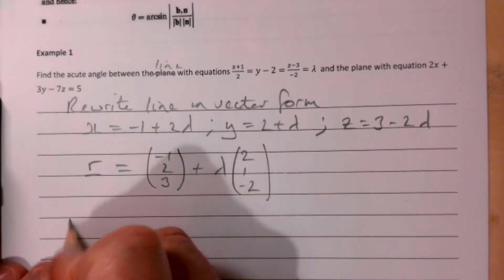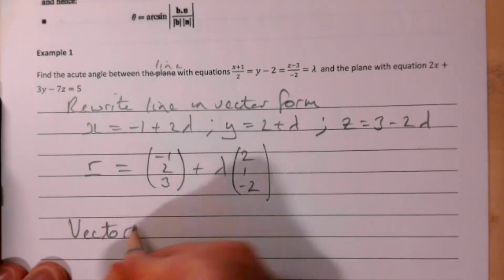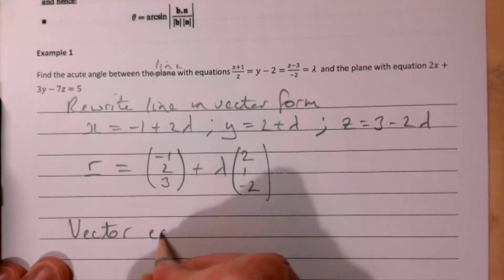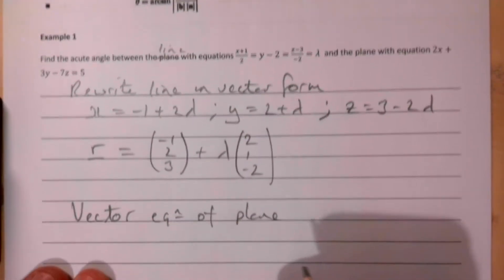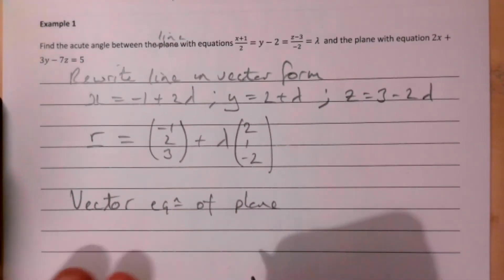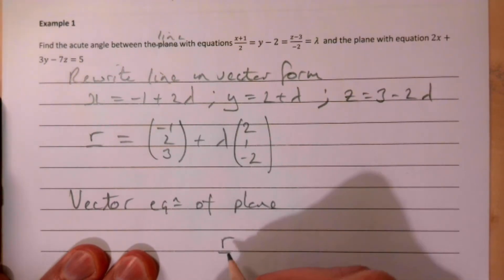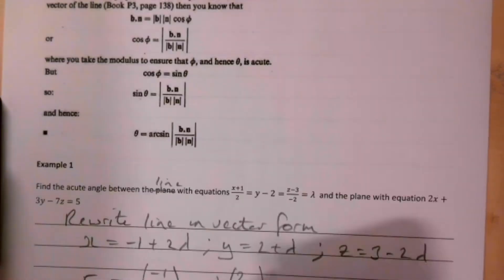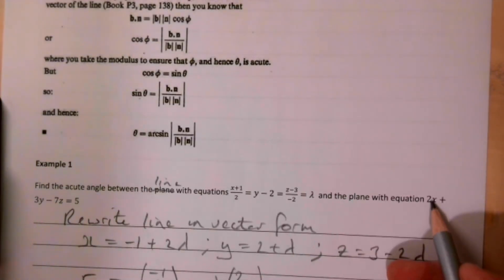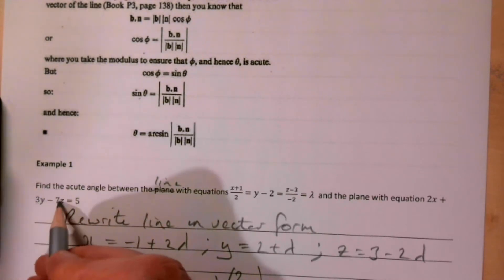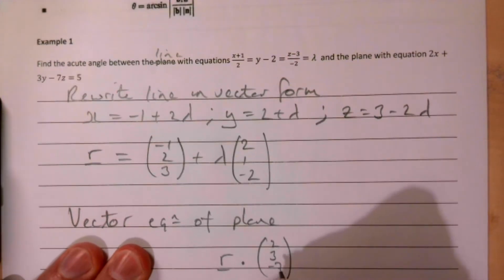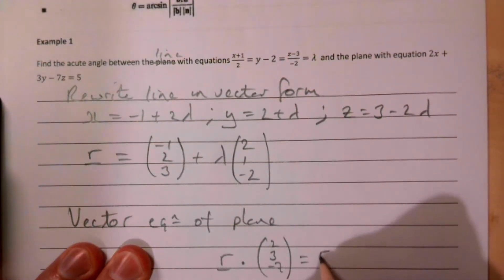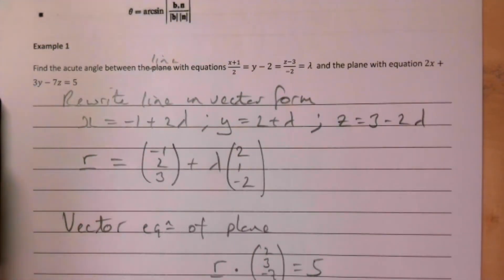For the vector equation of the plane, we want the scalar form: r · (2, 3, −7) = 5.